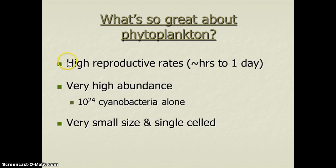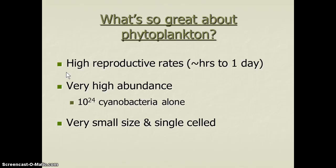Phytoplankton reproduce rapidly and are photosynthesizing the whole time. Their population grows exponentially, and they can also die and turn over, becoming essentially nutrients for the next generation of phytoplankton. This continual turnover of carbon creates a very high output for primary productivity.